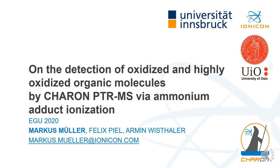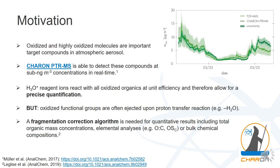Welcome to the EGU 2020 display on the detection of oxidized and highly oxidized organic molecules by Chiron-PTRMS via ammonium adduct ionization. Oxidized and highly oxidized molecules are important target compounds in atmospheric aerosol — they define the phase and production of the aerosol. Chiron-PTRMS is able to detect these compounds at sub-nanogram per cubic meter concentrations in real time. H3O+ reagent ions react with all oxidized organics at unit efficiency, allowing quantitative measurement.